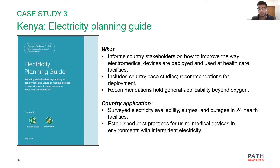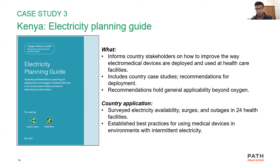I'm going to quickly discuss the electricity planning guide, which is another component of the oxygen toolkit that PATH has created. This tool is unique because its recommendations are not necessarily specific only to oxygen, but apply to all medical devices that require electricity — which is the vast majority of complex equipment, from infusion pumps and syringes to oxygen concentrators, PSA plants, and even air separation units, which are the very large industrial units often operated by industrial gas manufacturers to produce oxygen.